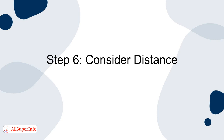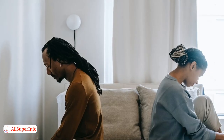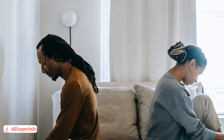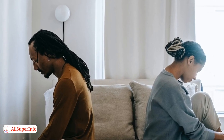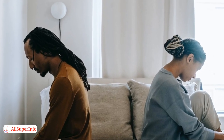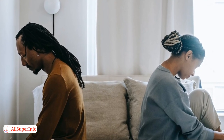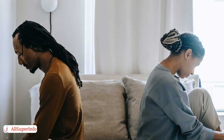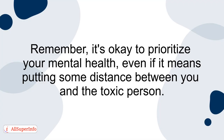Step 6: Consider distance. Step 6 encourages you to consider distance as a viable option. Sometimes creating physical or emotional space from toxic individuals is the best solution for your well-being. Remember, it's okay to prioritize your mental health, even if it means putting some distance between you and the toxic person.